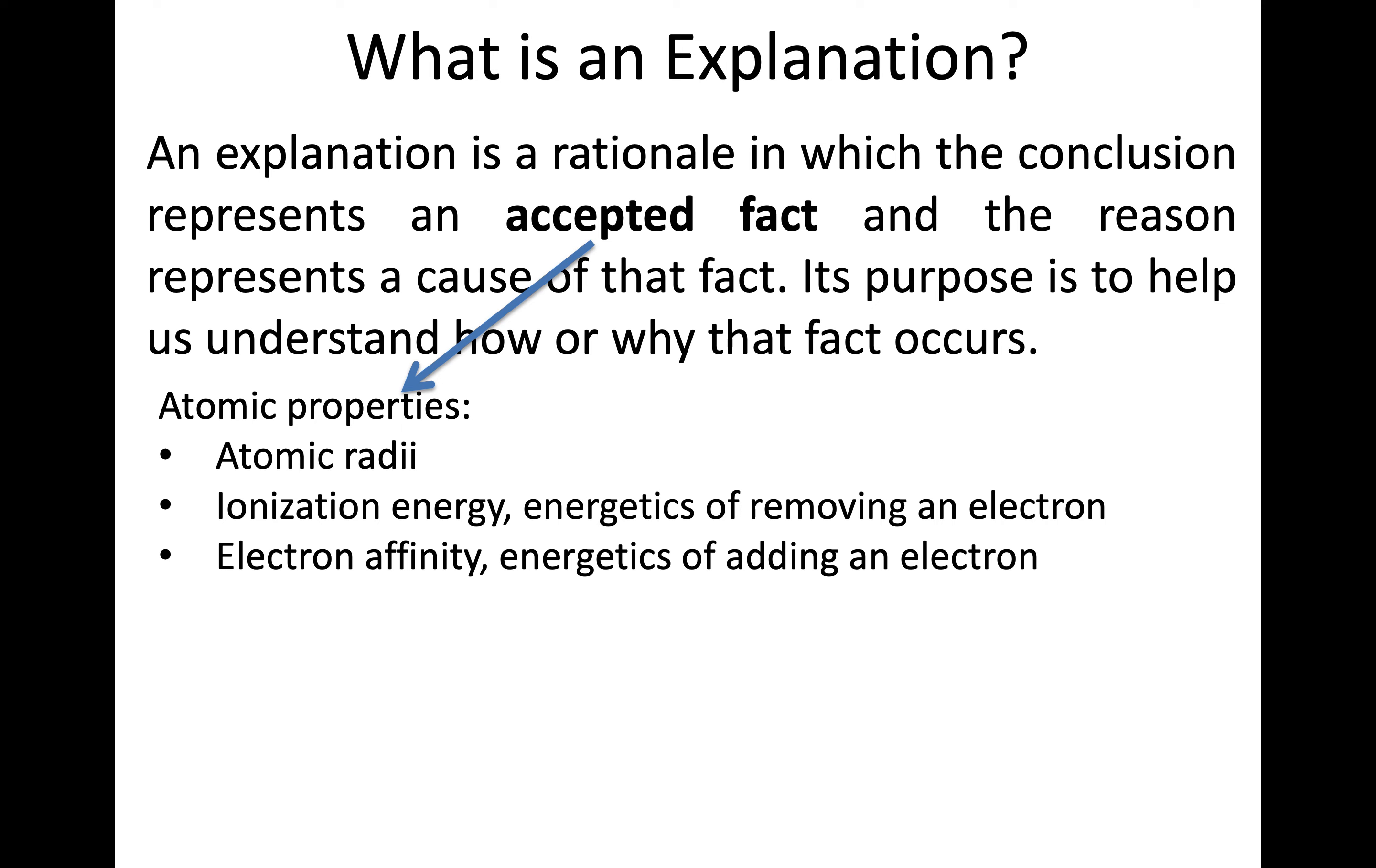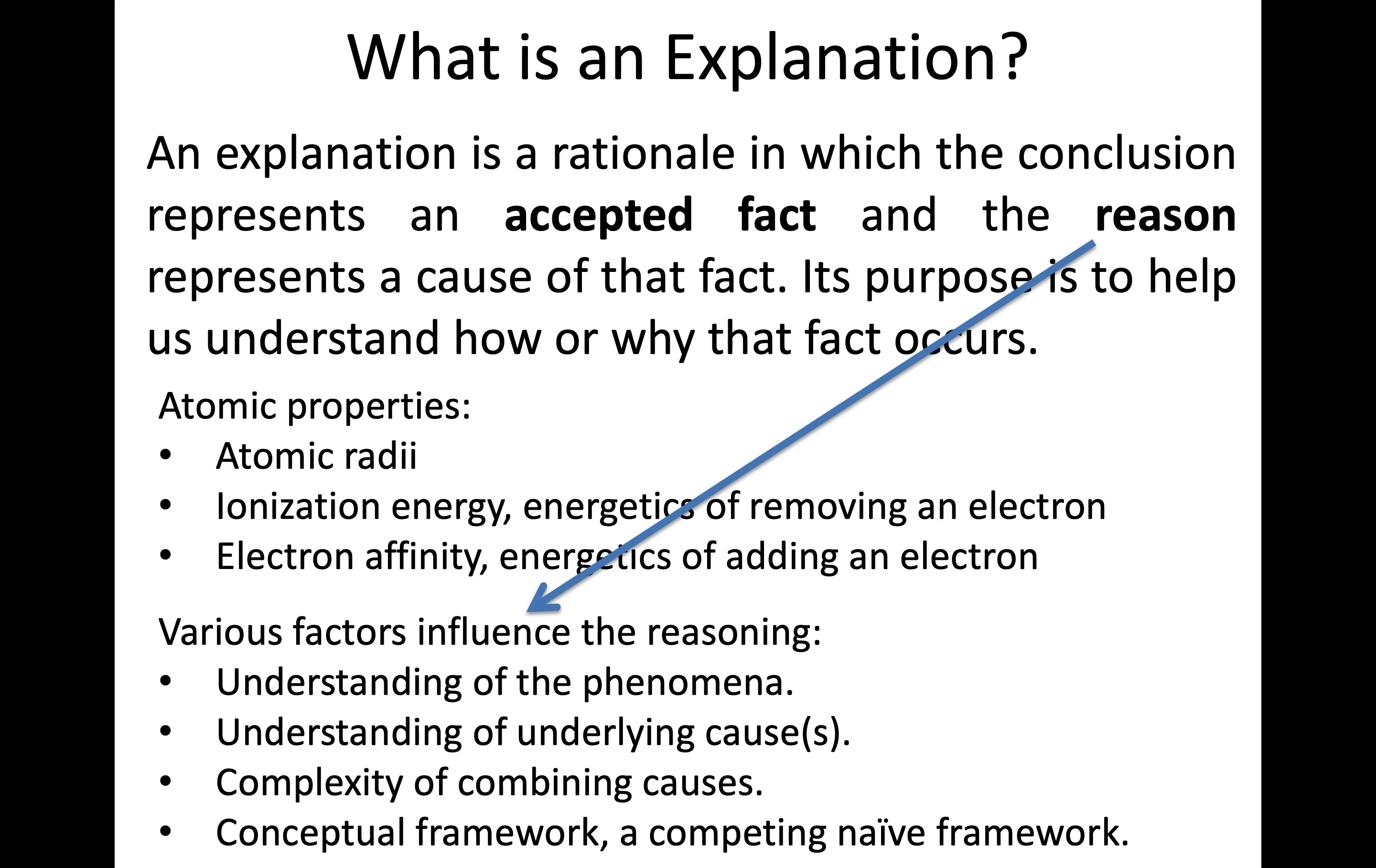Within this chapter, the accepted facts are what the data tell us about size, ionization energy, and electron affinity. These atomic properties are accepted facts we seek to explain. The reasoning requires understanding the phenomenon and underlying causes. Many times it's complex as we have multiple parts to the explanation. Often there's also a competing framework that seems to provide reasoning, but it's not a scientific one.